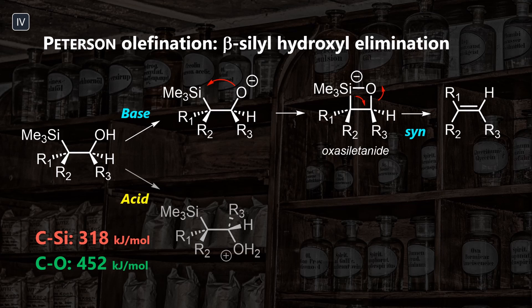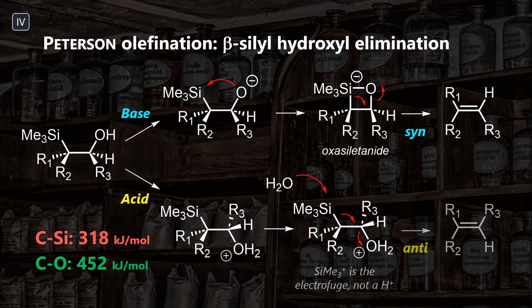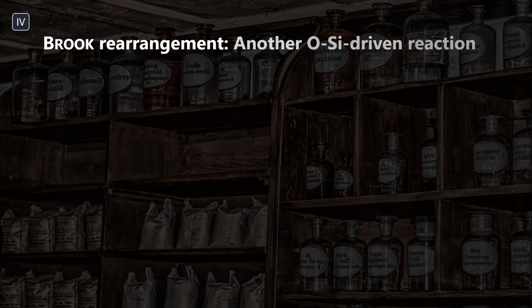As a second pathway, acidic conditions convert the hydroxy group into a better leaving group, which can eliminate in E2-anti fashion similar to what we've seen before. Another reaction facilitated by silicon-oxygen bond formation is the Brook rearrangement.